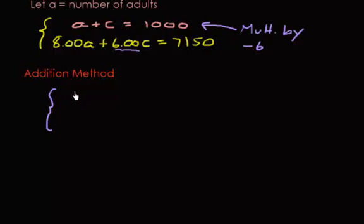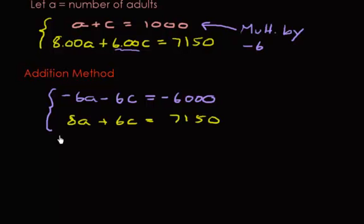Multiply everything in that equation by negative 6, so you get negative 6A minus 6C equals negative 6,000. The second equation stays 8A plus 6C equals 7,150. Now we add. Negative 6A plus 8A gives us 2A. Negative 6C and positive 6C cancel, so no more C's. And negative 6,000 plus 7,150 equals 1,150.